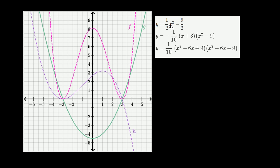This first equation is straightforward — it's a quadratic: y equals 1 half x squared minus 9 halves. The coefficient on the highest degree term is positive, specifically 1 half, so this is going to be an upward opening parabola. Looking at all the options, there is only one upward opening parabola, and that is g of x.